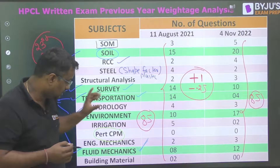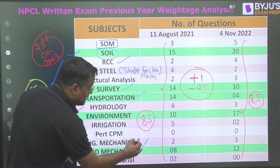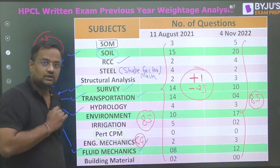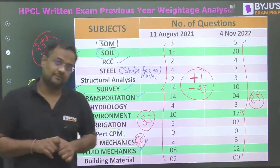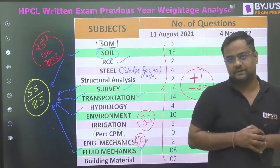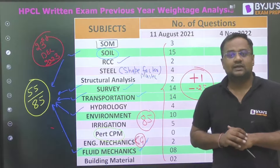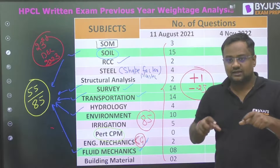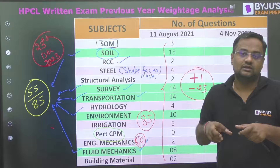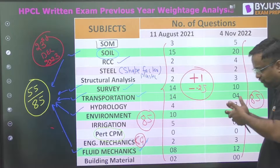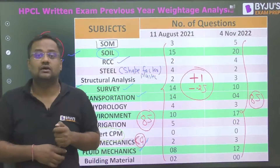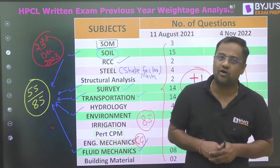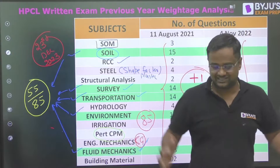One more thing I remember: in engineering mechanics, questions on center of gravity (CG) have been asked every year — 2022 and 2021 both had questions like 'where is the CG of a cone.' Our whole team at Your Exam Prep, especially the civil and mechanical team, is ready to help you whether it's HPCL or any other exam. Please use the comment section to tell me what updates, videos, or knowledge you need for your preparation. Thank you, take care, see you soon — this is Abhinav Negi signing off. Do like and share.